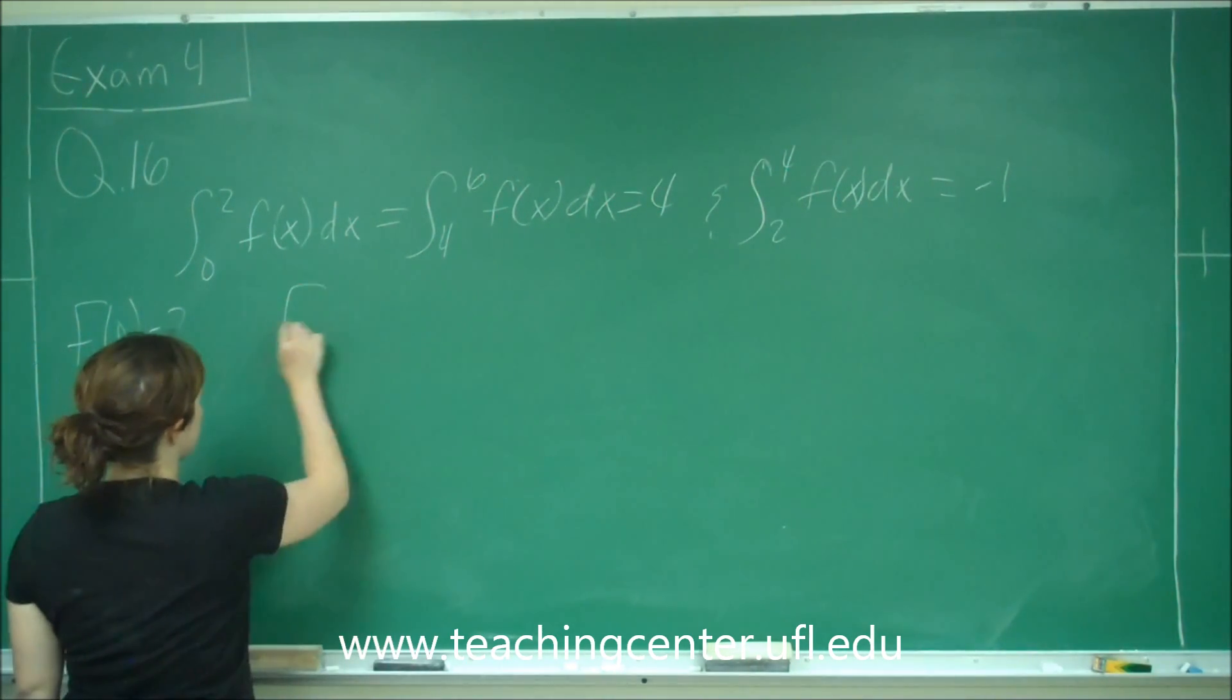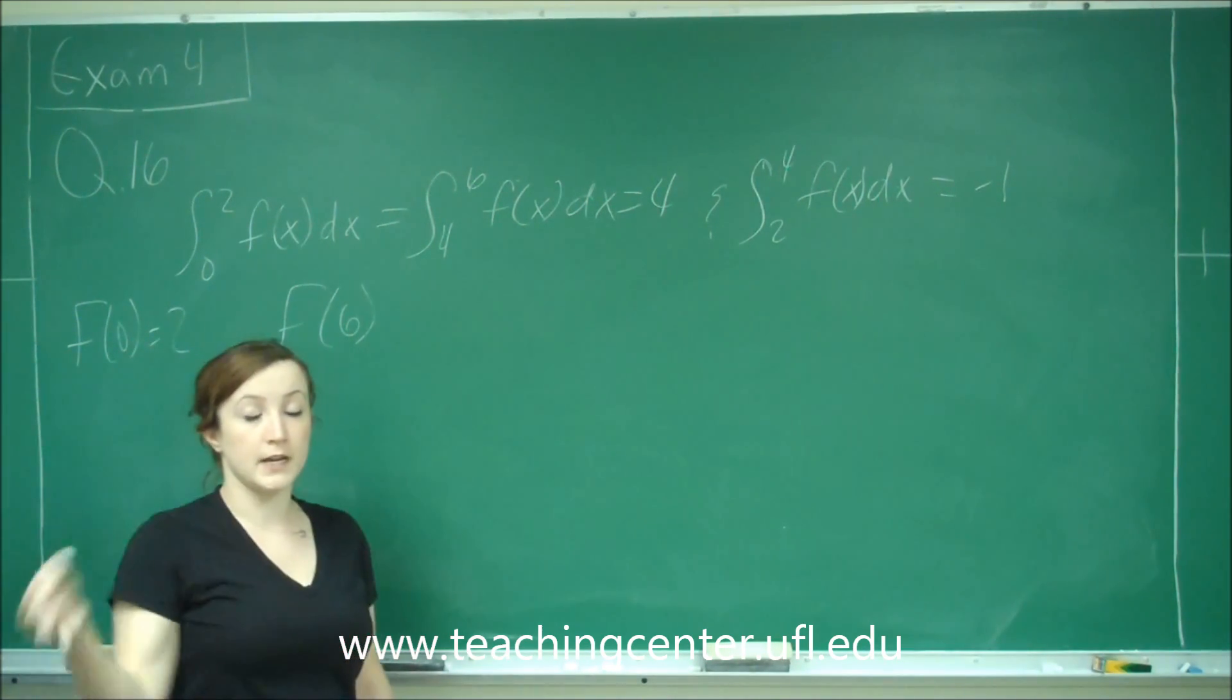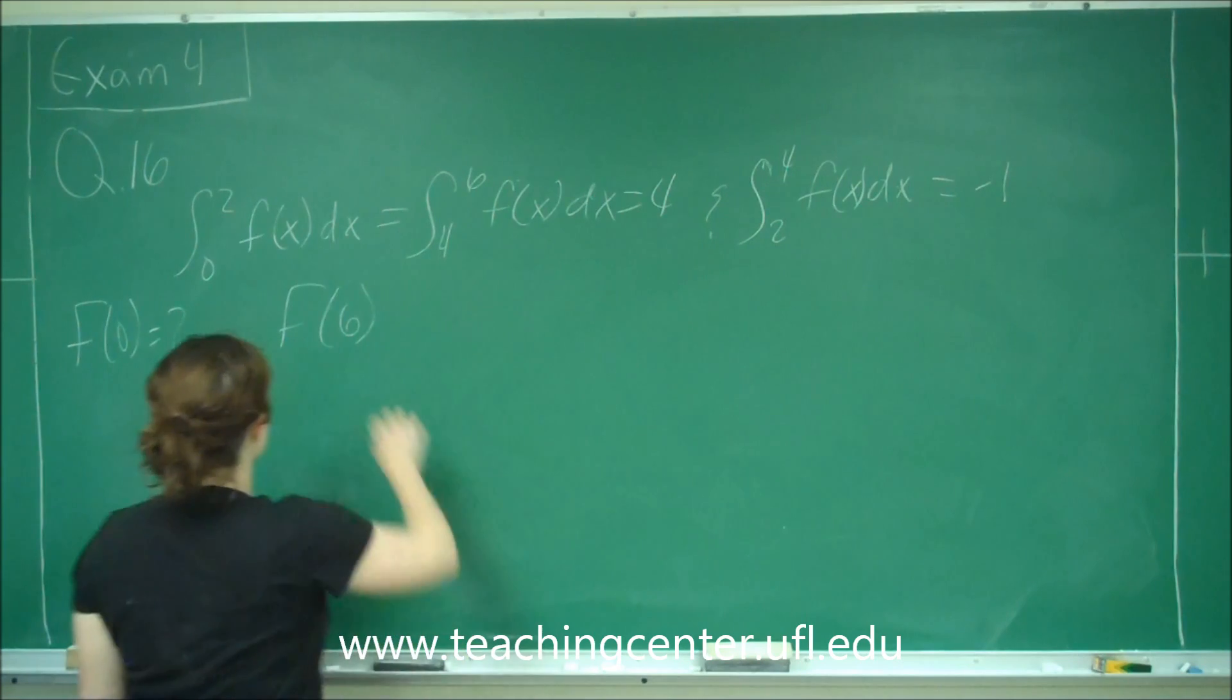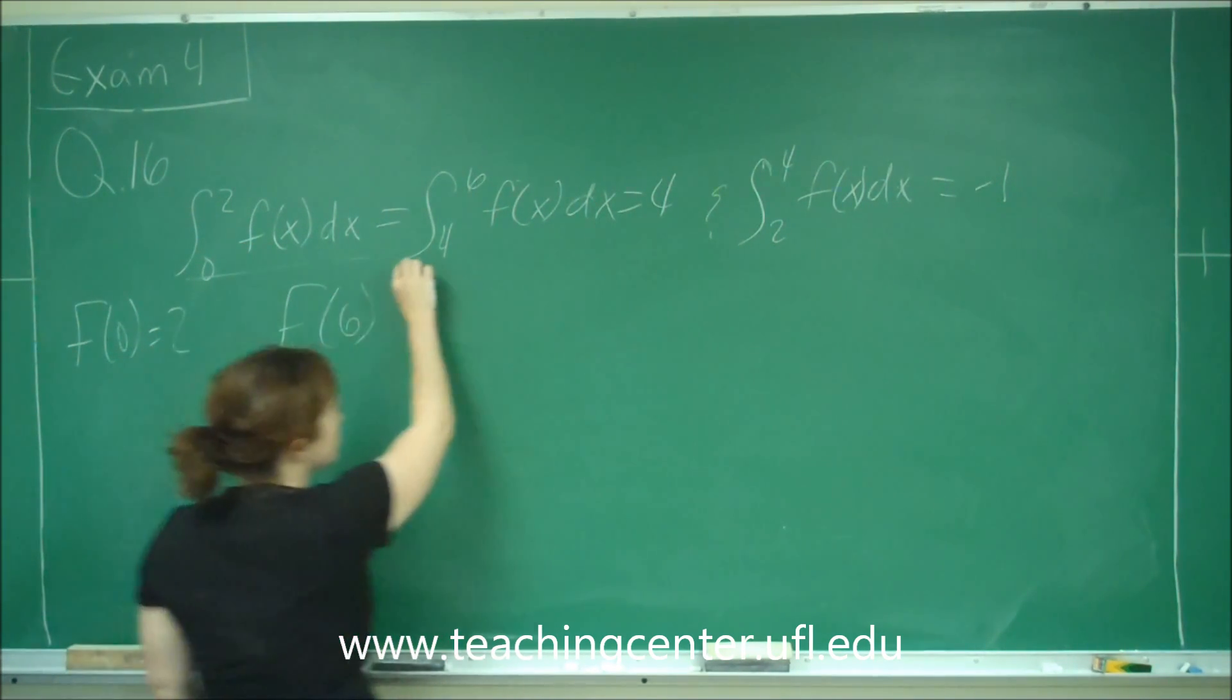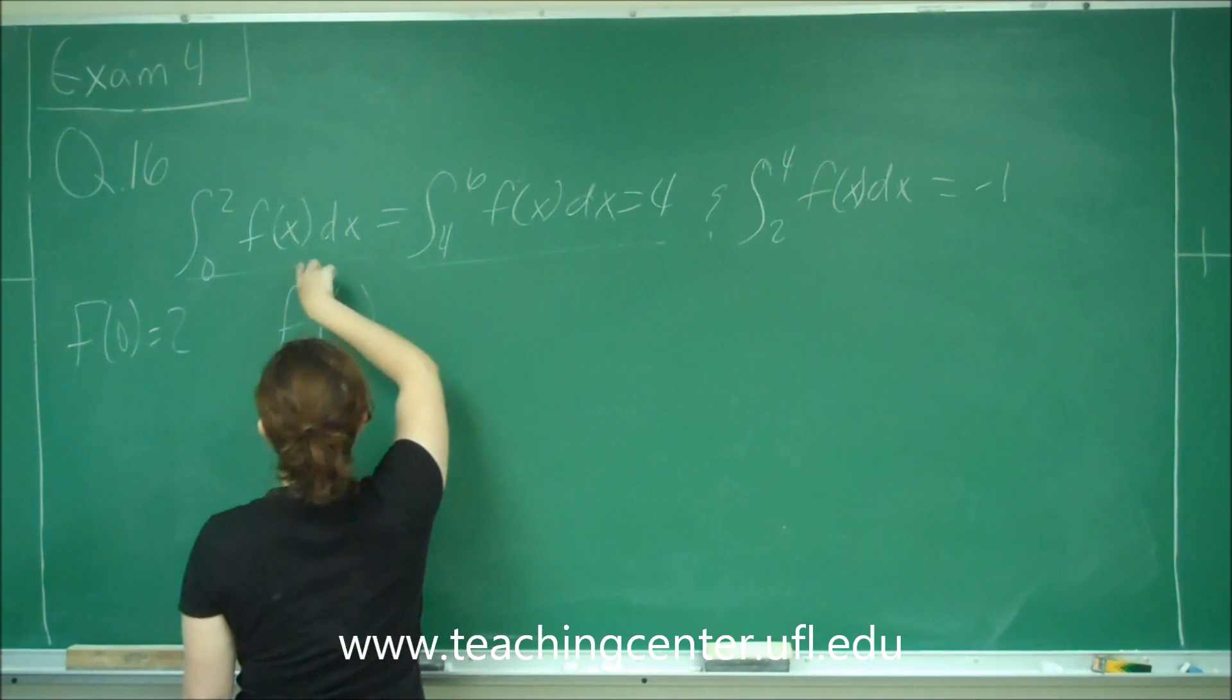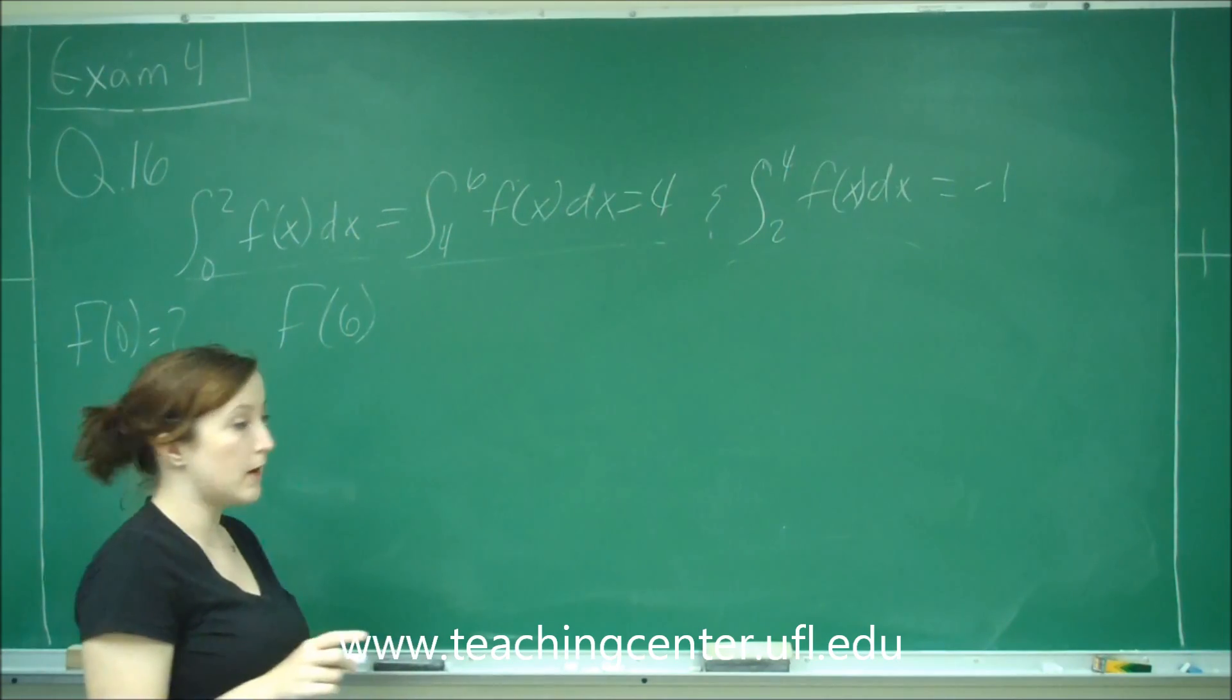So we're looking for F of 6. And F of 6 is actually going to be all of our integrals added up until we get to 6. So it's going to be this integral, whatever that answer is, plus this integral because that's from 0 to 2 and that's from 4 to 6.